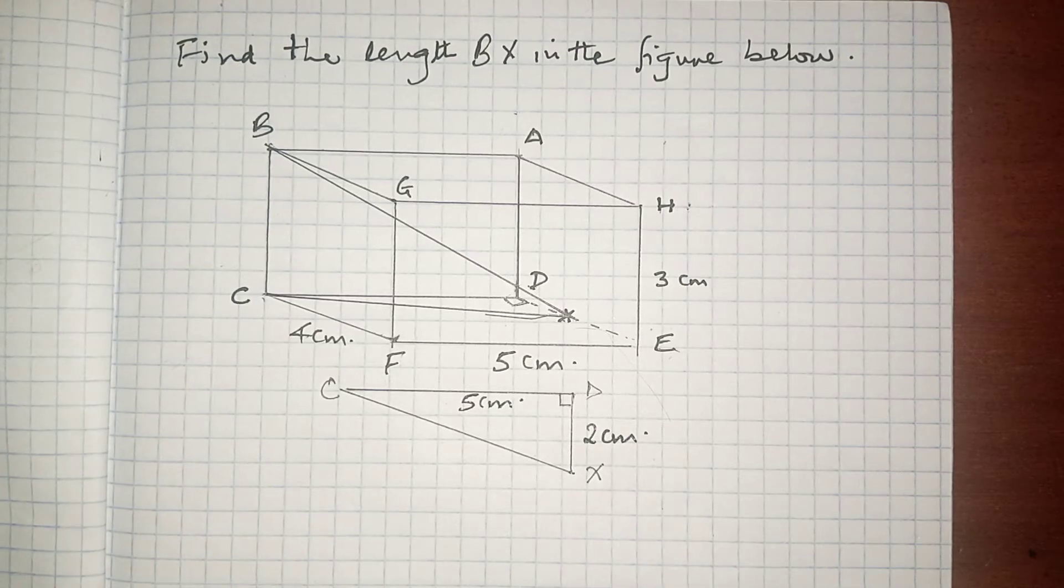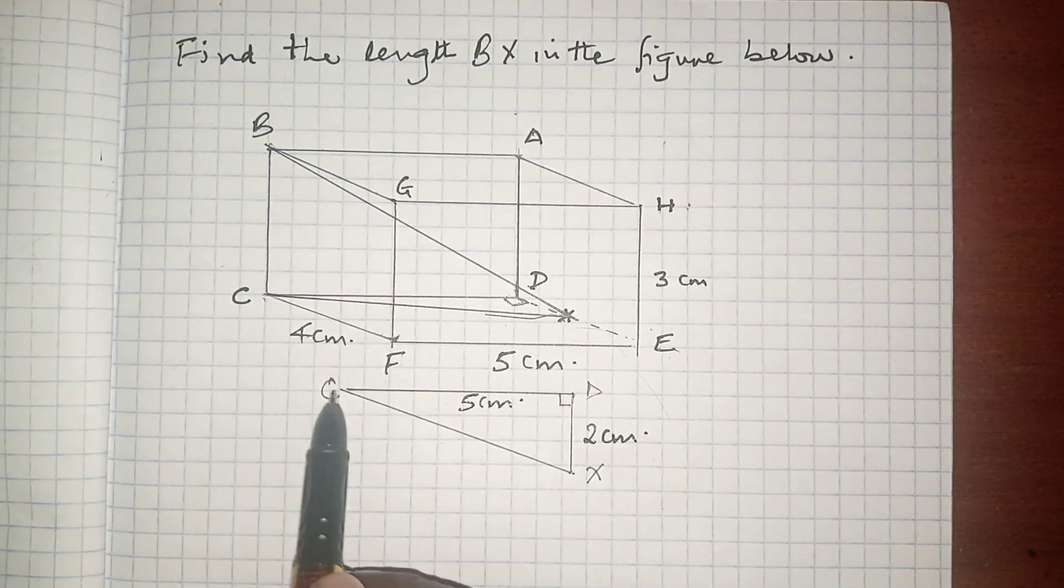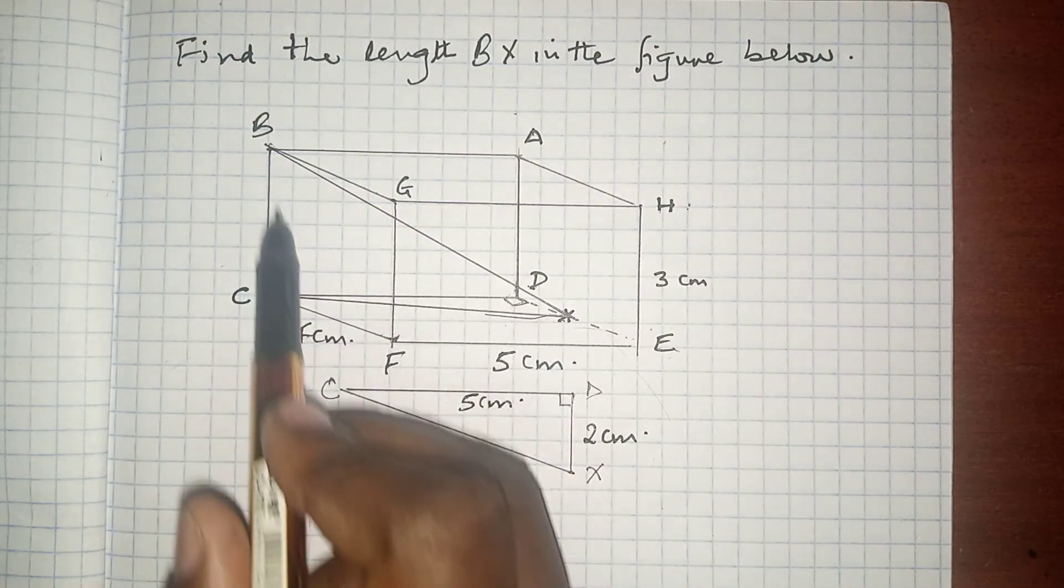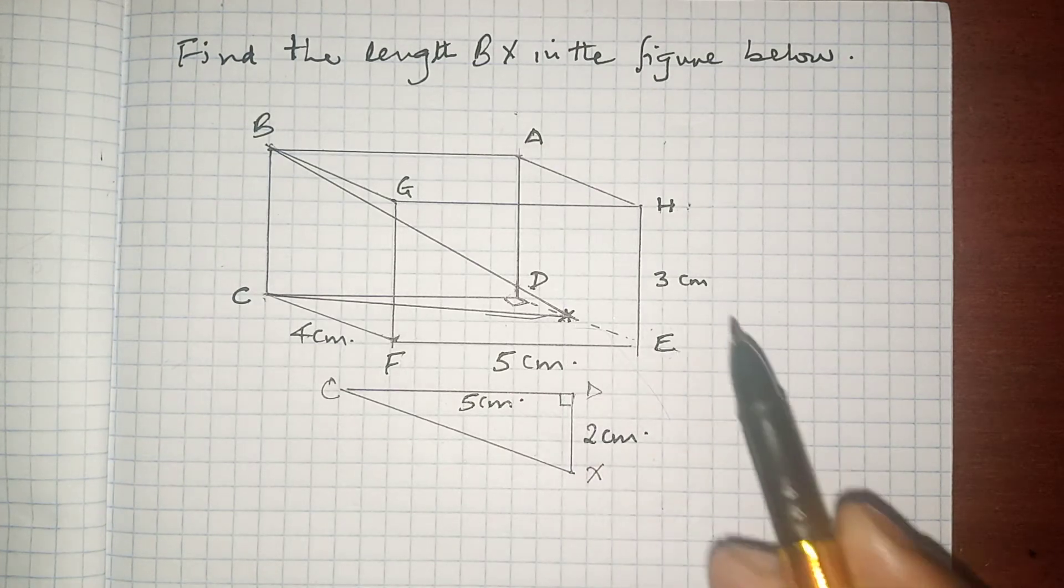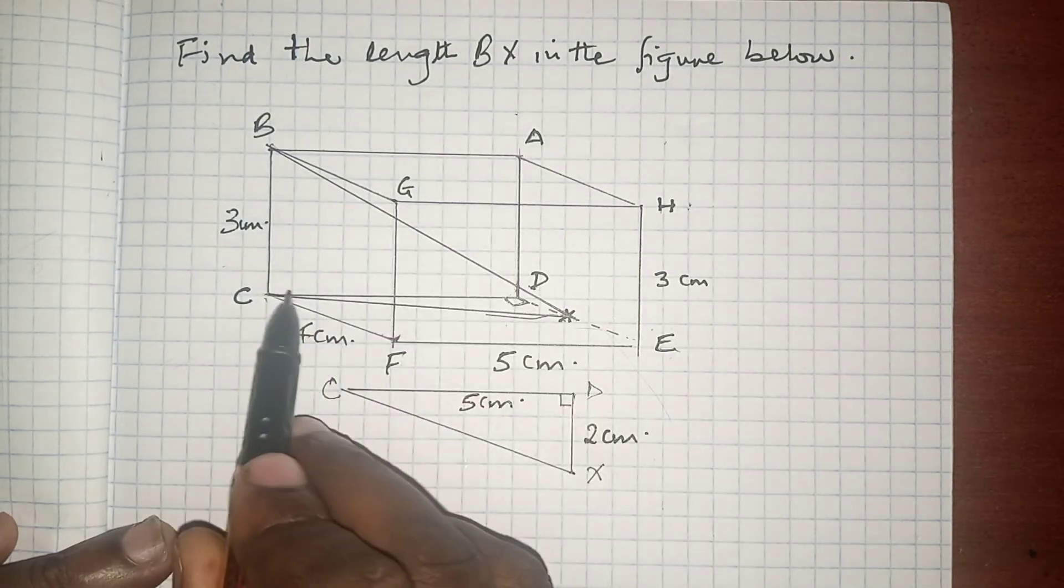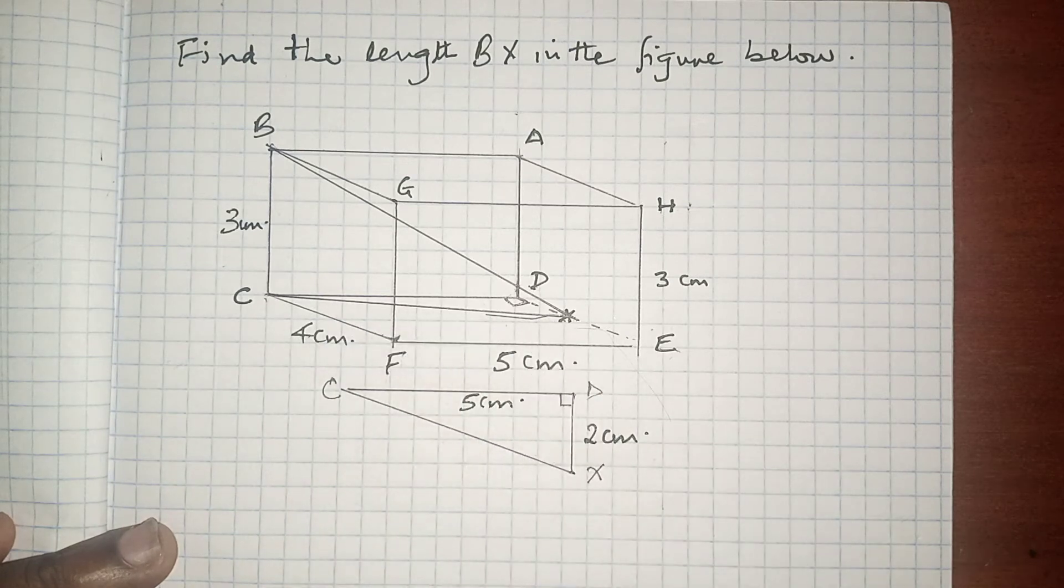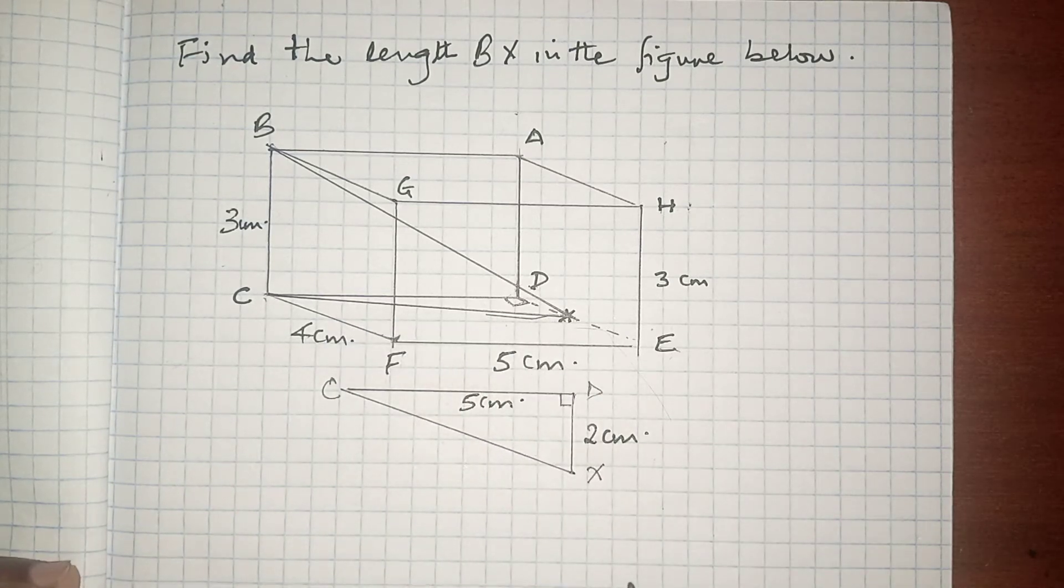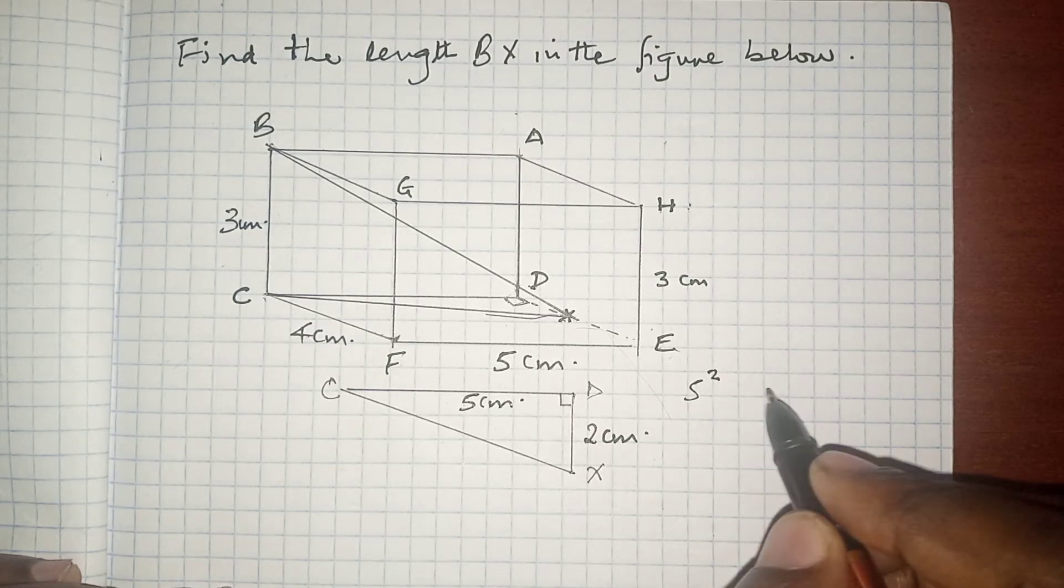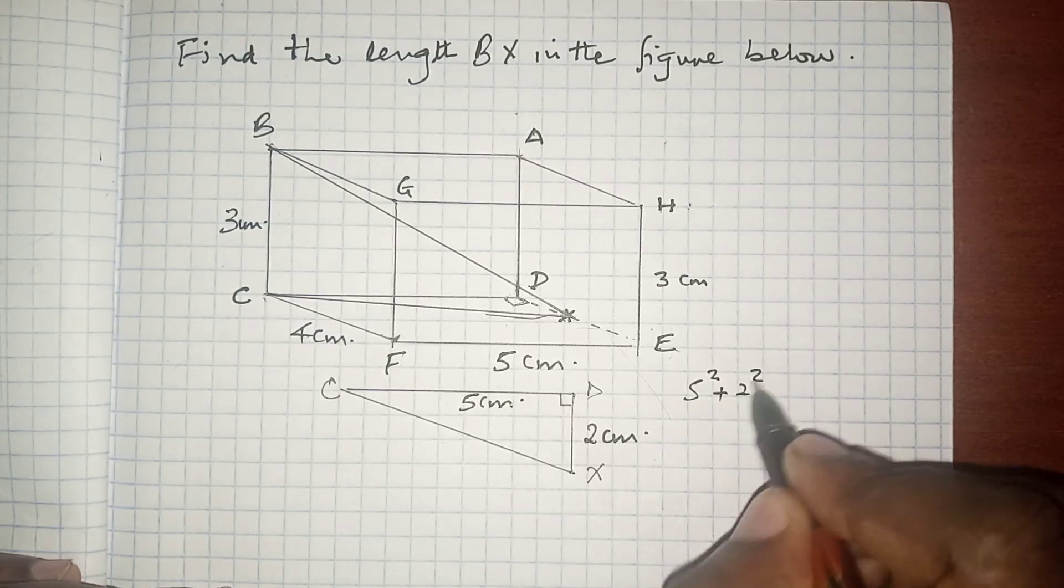Why do we need to calculate CX? Because CX is going to act as the base of triangle BCX. And remember, this is 3 cm. Now, according to Pythagoras theorem, we have 5 squared plus 2 squared.